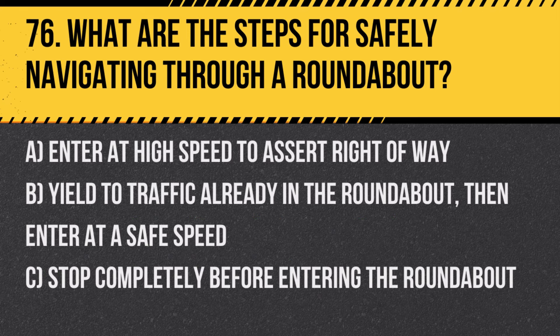Question 76: What are the steps for safely navigating through a roundabout? A. Enter at high speed to assert right-of-way. B. Yield to traffic already in the roundabout, then enter at a safe speed. C. Stop completely before entering the roundabout. Answer: B. Yield to traffic already in the roundabout, then enter at a safe speed. This ensures smooth traffic flow and reduces the risk of collisions.